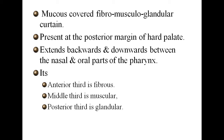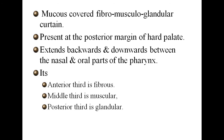The soft palate is a mucous-covered fibromuscular glandular curtain. It is made up of fibrous tissue, smooth muscles, and glands. It is present at the posterior margin of the hard palate and extends backwards and downwards between the nasal and oral parts of the pharynx. The anterior part is fibrous, the middle part is muscular, and the posterior part is glandular — hence it is called a fibromusculoglandular curtain.